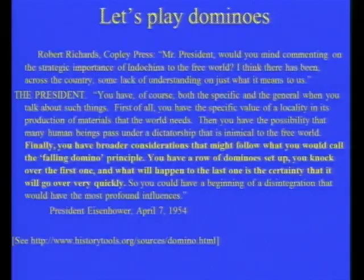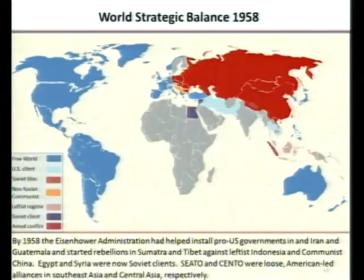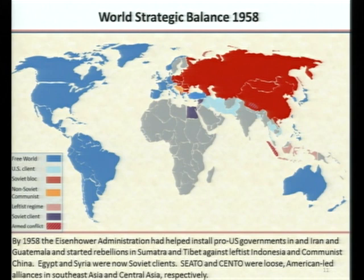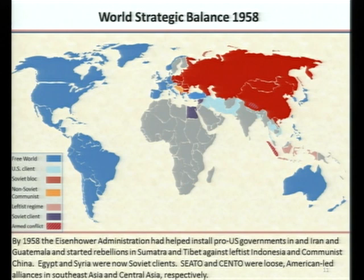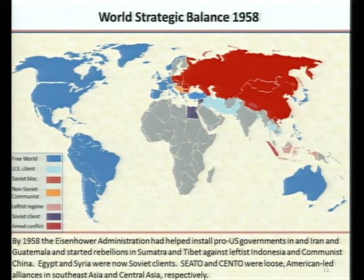Jumping ahead to 1958, in Indonesia the CIA started a civil war in Sumatra trying to get it to break away from the leftist Sukarno regime. They also started a guerrilla action in Tibet after the Chinese took over there. Meanwhile, as a result of crises in the Middle East, Egypt and Syria had become Soviet clients, which certainly was a setback for us.